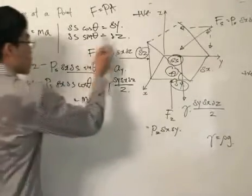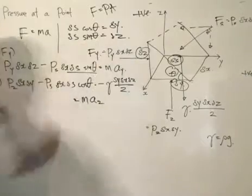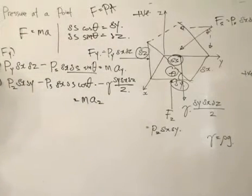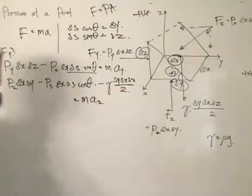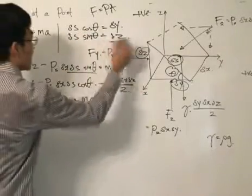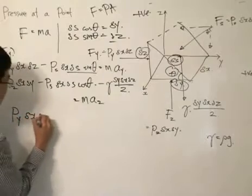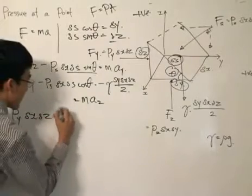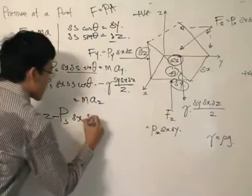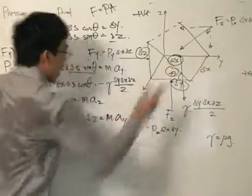We now have certain trigonometry identities relating delta S, delta Y, and delta Z. We can substitute these equations into our expression to eliminate the trigonometry functions. Delta S times sine theta equals delta Z, so we can write the pressure at Y times delta X times delta Z, take away the pressure at S times delta X — making the substitution, we get delta Z equal to the mass times the acceleration in the Y direction.